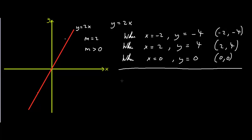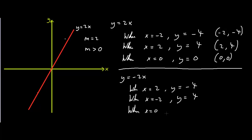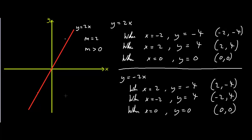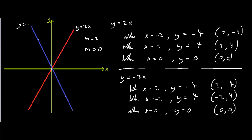Now let's draw the line y equals minus 2x. When x is 2, y equals minus 4. When x is minus 2, y equals 4. And when x is 0, y equals 0. So we get the coordinates 2, minus 4; minus 2, 4; and 0, 0. Let's plot these points on this coordinate system. If we join these points together, we get a line that looks like this. Now let's write y equals minus 2x here.